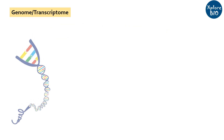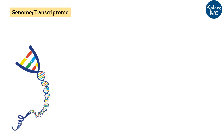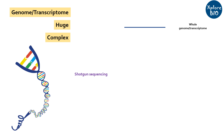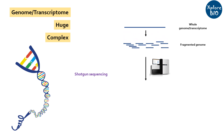The genome and transcriptome of most eukaryotic organisms are huge and complex to be entirely sequenced in a single go. In order to sequence the entire genome or transcriptome, most sequencing approaches follow a shotgun sequencing procedure. In this, the large fragments of DNA or complementary DNA are first broken down into short chunks which can be sequenced by a sequencing instrument.